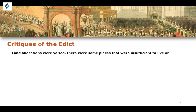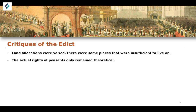One critique was that with the issuance of land allocations, there was variance in the amount people were given, and some allocations were too insufficient to live on. So serfs were given freedom but land that was not good enough to live on or make any profit from. In terms of legal rights issued in the Edict, these still remained largely theoretical in nature — there was significant differentiation between the legal rights of nobles, the upper classes, and the professional class compared to the peasantry, from which the vast majority of serfs came.